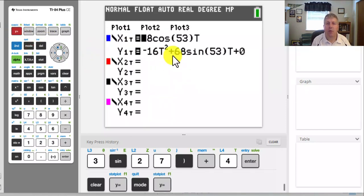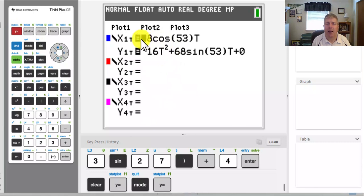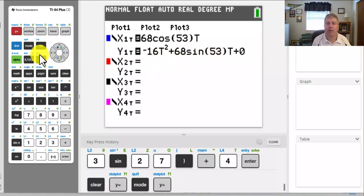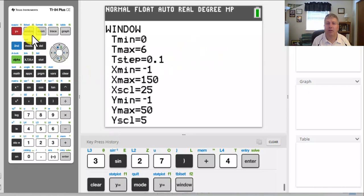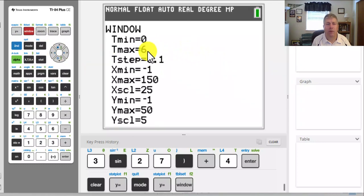And then I input my two equations. I put my x equation for my horizontal distance 68 cos(53°)t, and then my height, my y, my vertical distance, -16t² + 68 sin(53°)t. Then go ahead and take a look at our window. Went between 0 and 6 seconds.